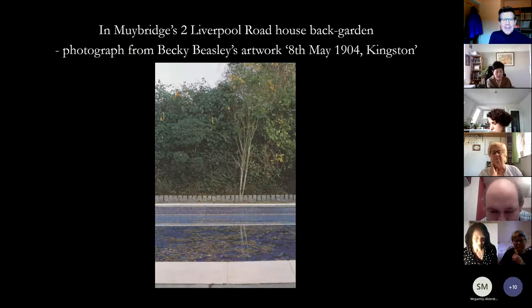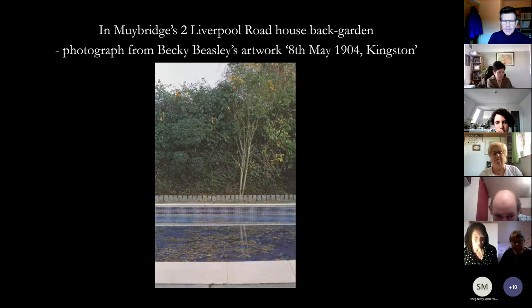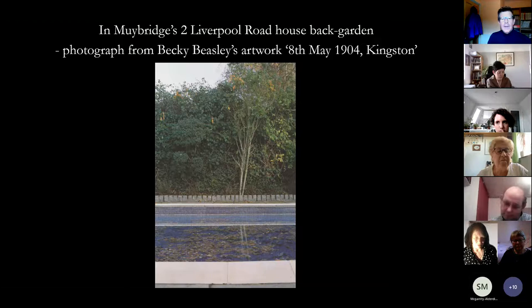There are stories that Muybridge actually died in the back garden of this Liverpool Road house, close to the Kingston entrance to Richmond Park, while digging this swimming pool. There is still a swimming pool in the back garden of Muybridge's final house. He died in this house in 1904. Muybridge had returned to Kingston with his vast personal archive, and so the archive also needed a home at the end of his life.